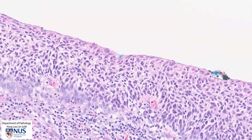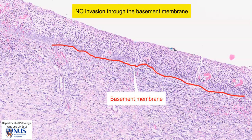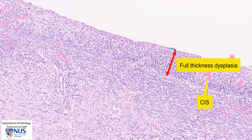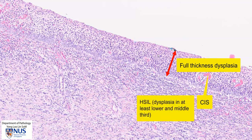So this epithelium is dysplastic or neoplastic. However, we can see that there is no invasion through the basement membrane into the stroma. Hence, this neoplastic process is still limited to the stratified squamous mucosa and is present in the full thickness of the mucosa. Hence, this is carcinoma in situ. Other names for this include high-grade dysplasia as well as high-grade squamous intraepithelial lesion, or HSIL. All these names mean there is still no invasion through the basement membrane. If there were invasion through the basement membrane into the stroma, the diagnosis would be squamous cell carcinoma.